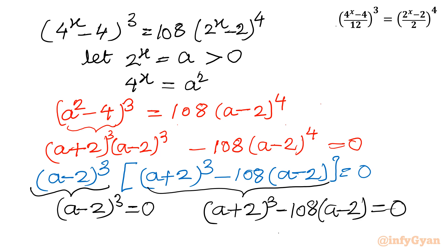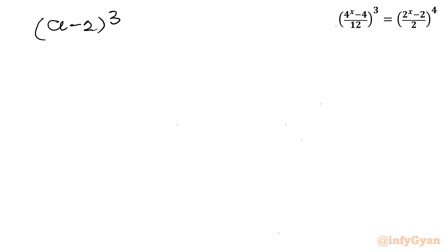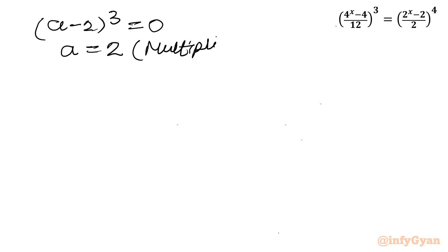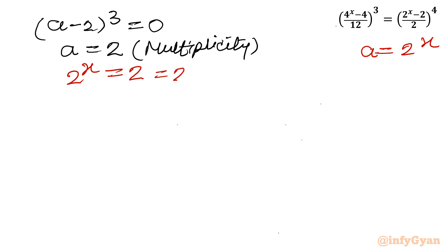Since f · g = 0 implies f = 0 or g = 0, we first solve (a - 2)^3 = 0, giving a = 2. Since a = 2^x, we have 2^x = 2 = 2^1. Comparing exponents, our first solution is x = 1.